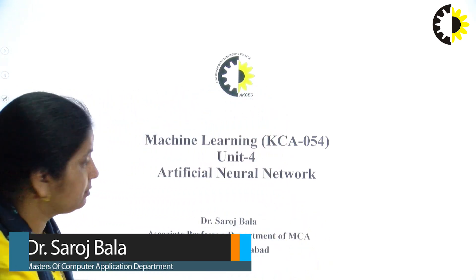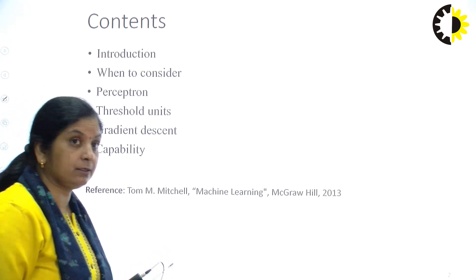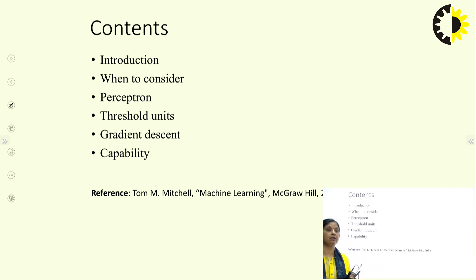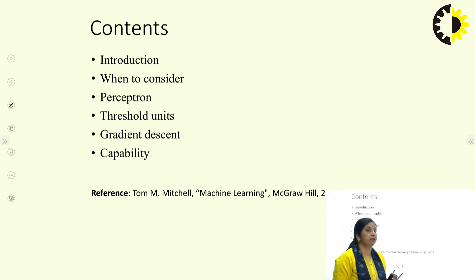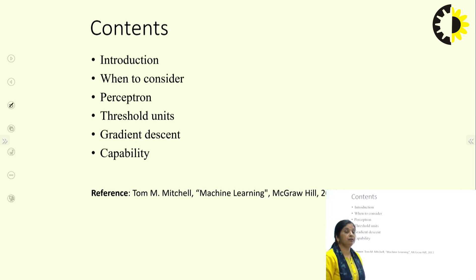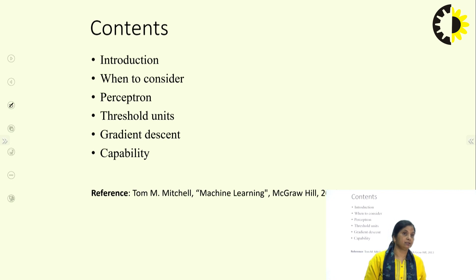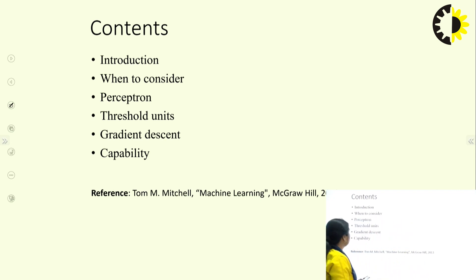What we are going to cover: we will start from an introduction, then talk about where we consider neural networks, what type of problems we can implement neural networks in, and what different areas have shown very good results. We will start the concept with the perceptron — the basic unit — discuss threshold units, then gradient descent for problems that are not linearly separable, and conclude with the expressive capability of neural networks.